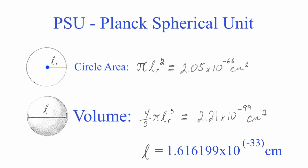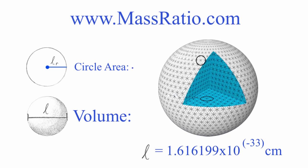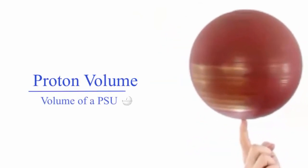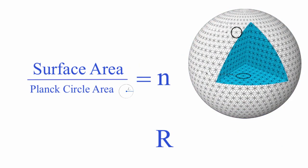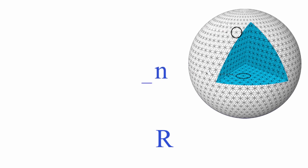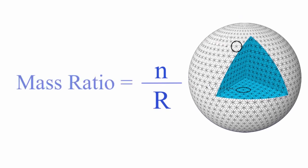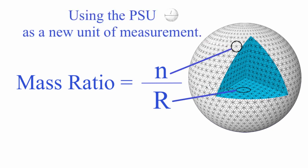Okay, good. Now we can use this information to find the mass ratio. Pretend this basketball is a spinning proton. Now, if we take the volume of a proton and we divide it by the volume of a PSU, we get R, or the number of PSUs within the proton. Then, if we take the surface area of the proton and we divide it by the Planck circle area, we get N, the number of areas that we can tile on the surface of the proton. Then we divide the number on the outside by the number on the inside and we get the mass ratio. Surface area divided by volume, using the PSU as a new unit of measurement.